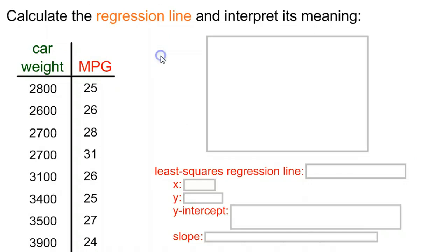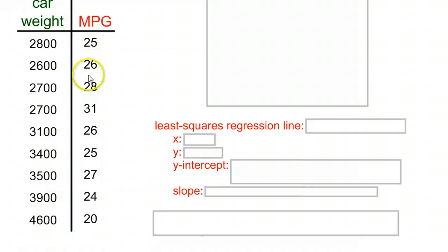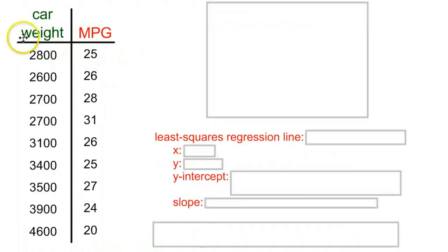So calculating the regression line and interpreting its meaning, you would have to take a set of data, a set of two quantitative variables, and plug it into some sort of calculator, whether it be handheld or online. In this example, we're comparing the weight of a car and its miles per gallon. Since we're assuming that the weight of the car is probably going to have more effect causing the miles per gallon than the other way around, we're going to say that the weight of the car is the X, the miles per gallon is the Y. So we have the explanatory variable with the car weight and the miles per gallon as the response variable.